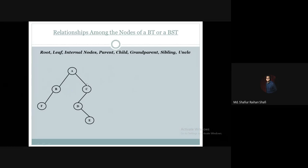So first let us discuss about root, leaf, and internal nodes. In this structure, A is the root. Now, a node is called a leaf node if it has no children. Looking at the structure, F, B, and E are nodes that have no children, so they will be referred to as the leaf nodes of this structure.